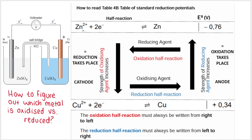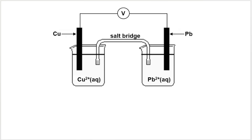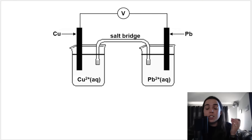In the previous video we looked at the zinc-copper half cell — please watch that video if you missed it. On table 4b, zinc is higher up on the table than copper, which means zinc is oxidized. Copper is lower down on the table and therefore will be reduced. Let's look at a few more examples and I'll show you how to use the table to figure out which substance is oxidized, which is reduced, and therefore which is the anode and which is the cathode.